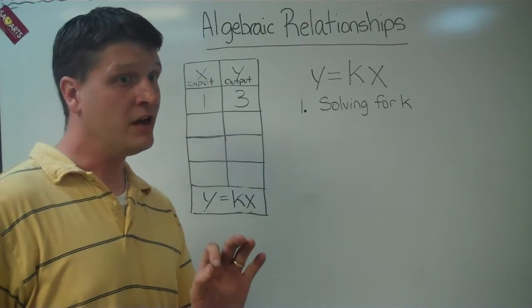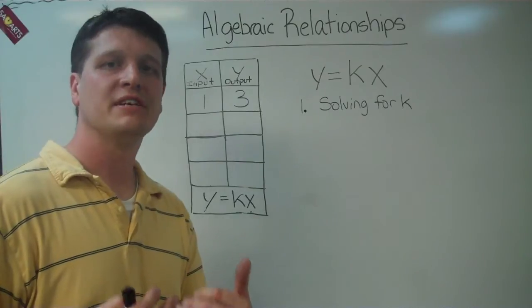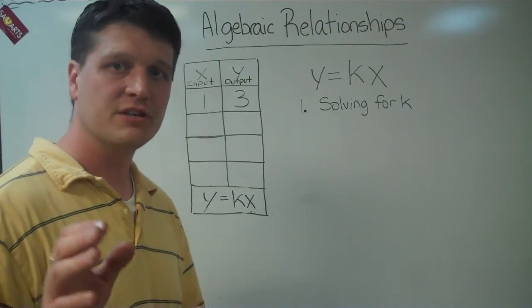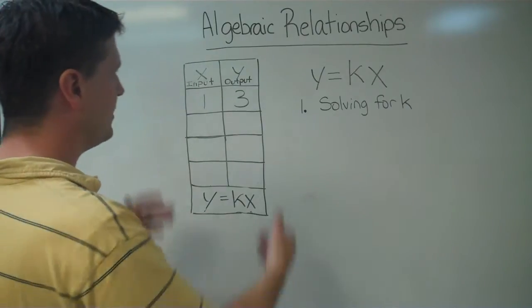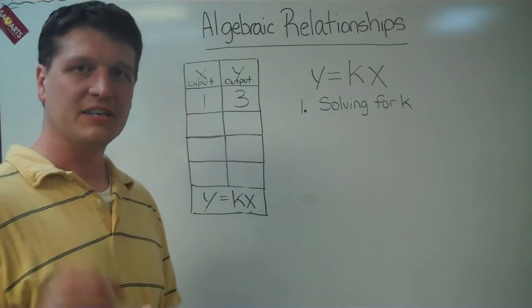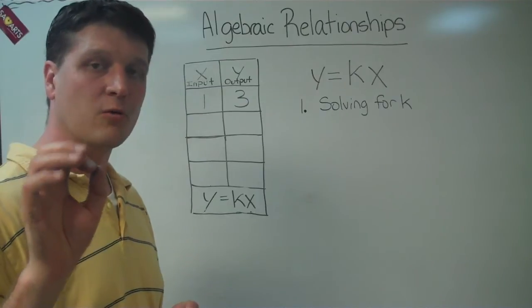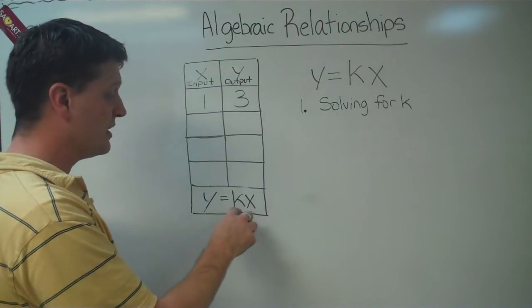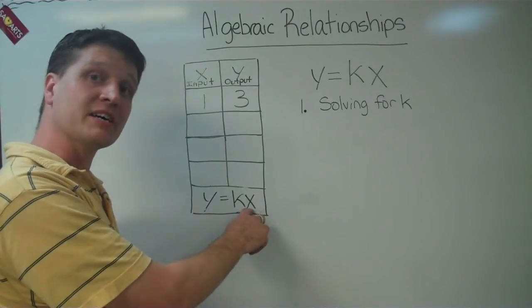It's not the only one, but it's the one we're going to talk about today. And that algebraic relationship, the equation we're going to use to find the algebraic relationship in this table is a simple equation, and it's called y equals k times x.